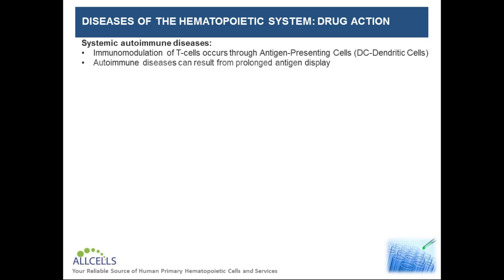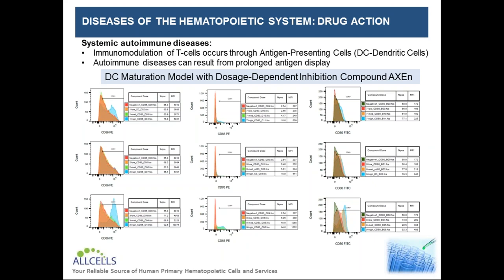Although many autoimmune diseases are a result of overactive T cells, many times the issue is not something inherently wrong with the T cells, but instead inflammation occurs from prolonged antigen display by professional phagocytes like dendritic cells or macrophages, causing constant T cell stimulation. Here we show a drug screening flow cytometry assay in which a compound was being tested at different dosages to see if there was inhibition of the maturation of dendritic cells from CD14-positive monocytes. A number of different markers specific to dendritic cells were analyzed, such as CD86, CD83, and CD80 among many others, and we were able to format overlays of all conditions to accurately compare drug efficacy.